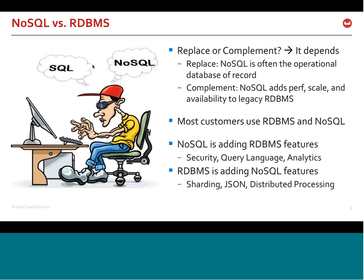Adding to the complexity, NoSQL vendors — including Couchbase — are adding features typically found in relational databases, including security, query language, and analytics. Meanwhile, relational database vendors are introducing NoSQL features like automatic sharding, JSON support, and distributed processing. So you need to look at what problem you're trying to solve and which technology is best suited to solve it.